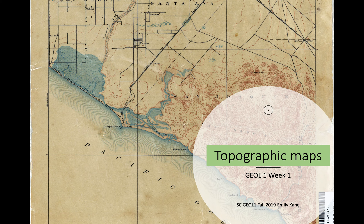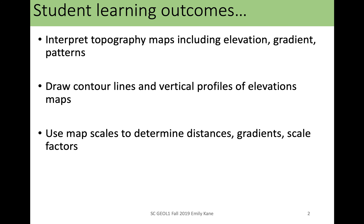Today we're going to be learning about topographic maps. We've seen some topographic maps and talked a little bit about topography with our cross sections of plate boundaries, but today we're going to get into reading and drawing a topographic map. We will learn about elevation, gradient, and different patterns that you can see. You're going to learn how to read and actually draw contour lines and vertical profiles of elevation maps, and we're going to look at scales and how map scales can help us determine distances and gradients.